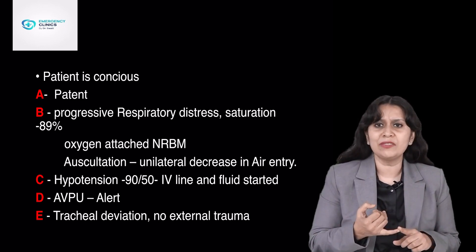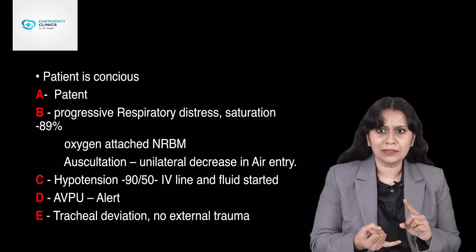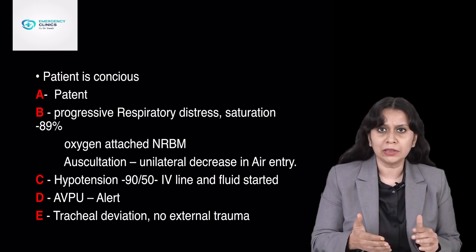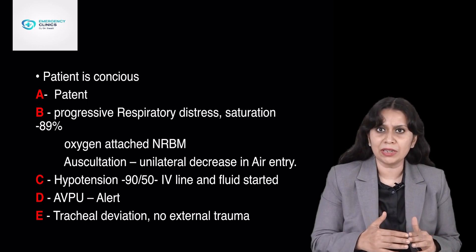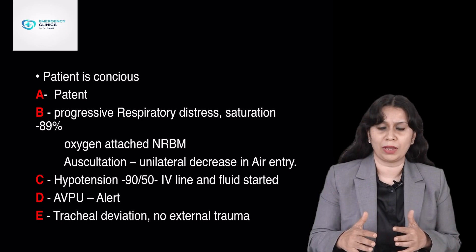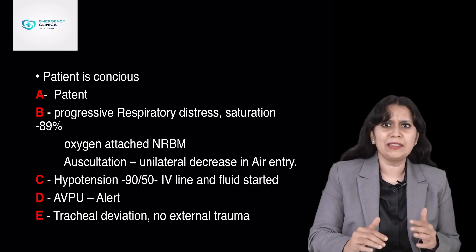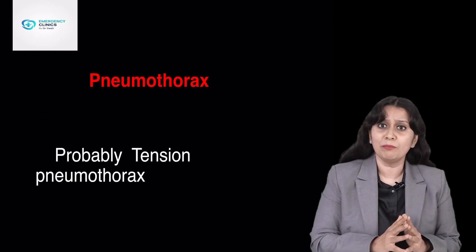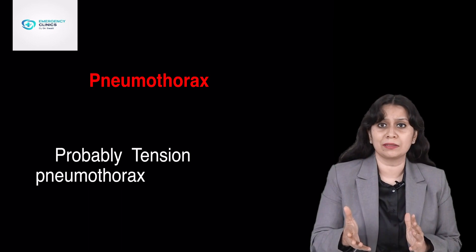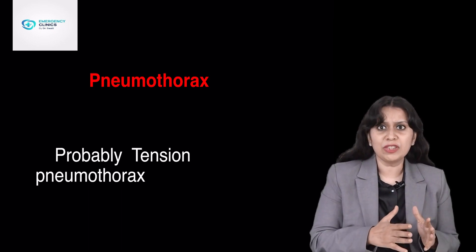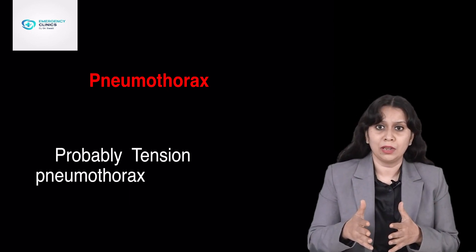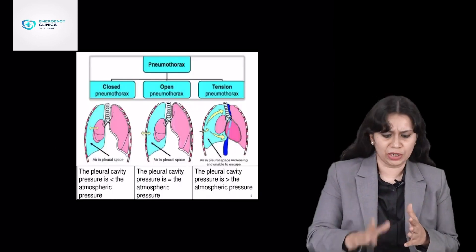So what are the positive findings I got? The patient had progressive tachypnea, hypoxia, hypotension, and a unilateral decrease in air entry — all post-trauma. So what is the most probable diagnosis? The most probable diagnosis is pneumothorax, and more specifically tension pneumothorax. Why tension pneumothorax? Because the patient was presenting with both progressive hypoxia and hypotension.